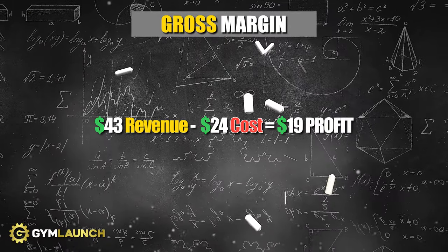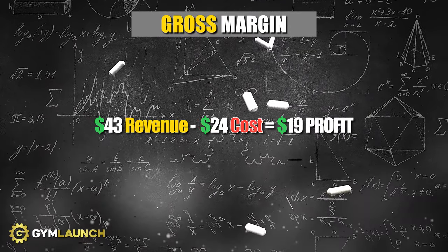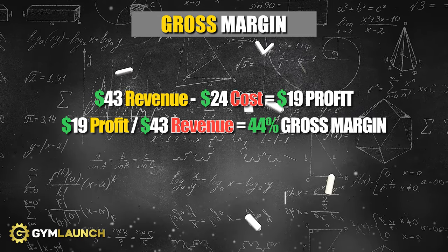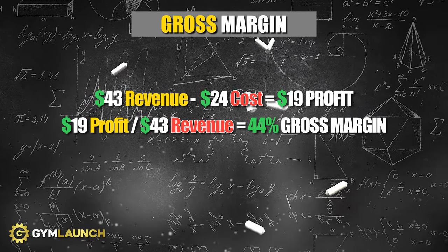The actual formula is: find the difference between your revenue and your cost, then divide that difference by your revenue to get your gross margin. So: $43 minus $24 equals $19 — that's your gross profit per class. Then $19 divided by $43 gives you 44%. That's a 44% gross margin. Doesn't sound like 80% to me, and 80% should be the minimum standard.